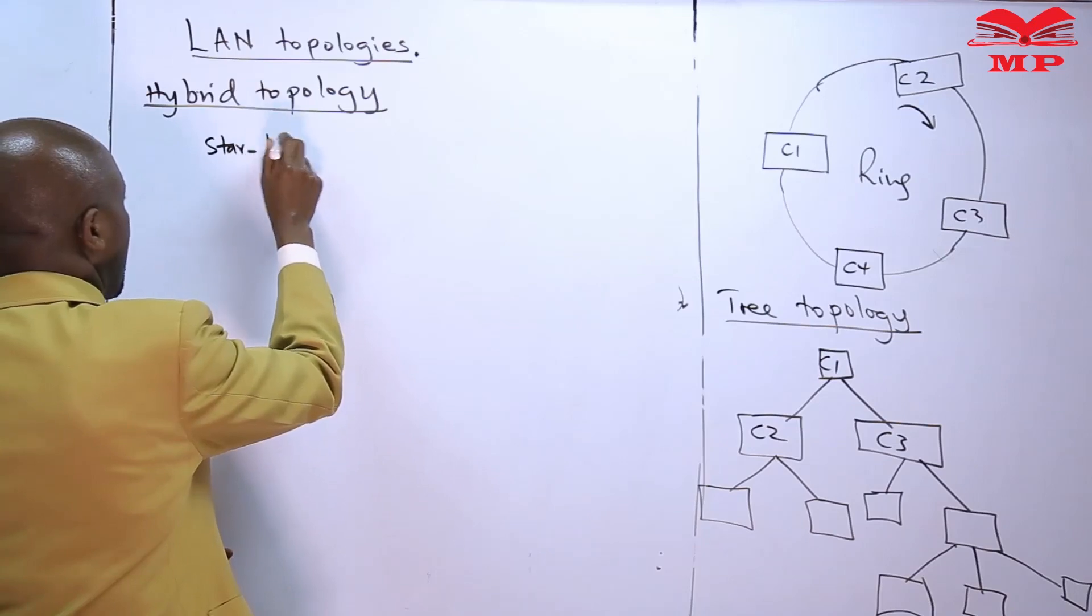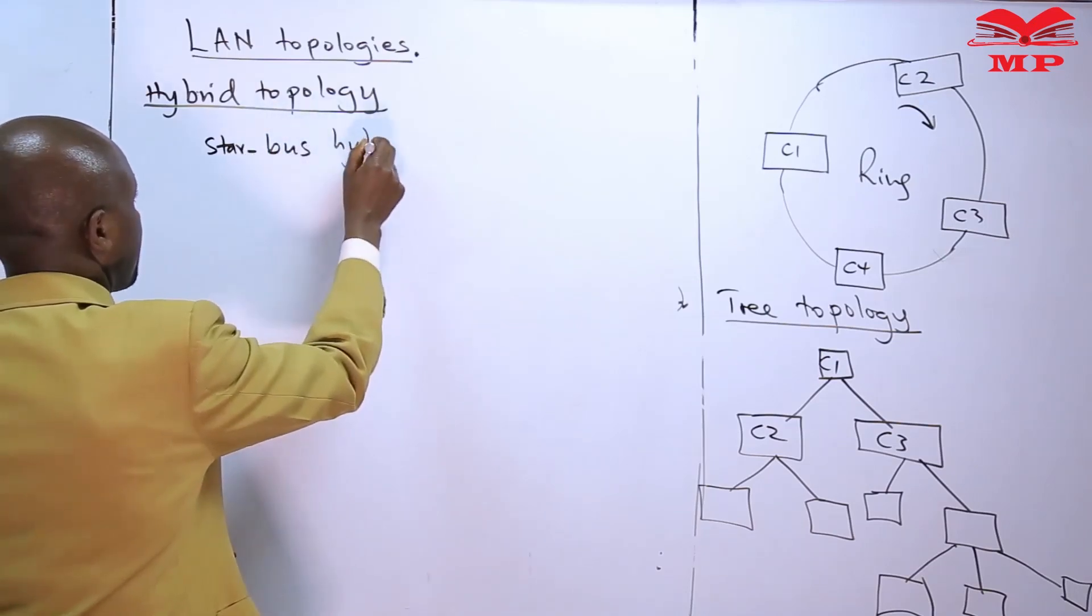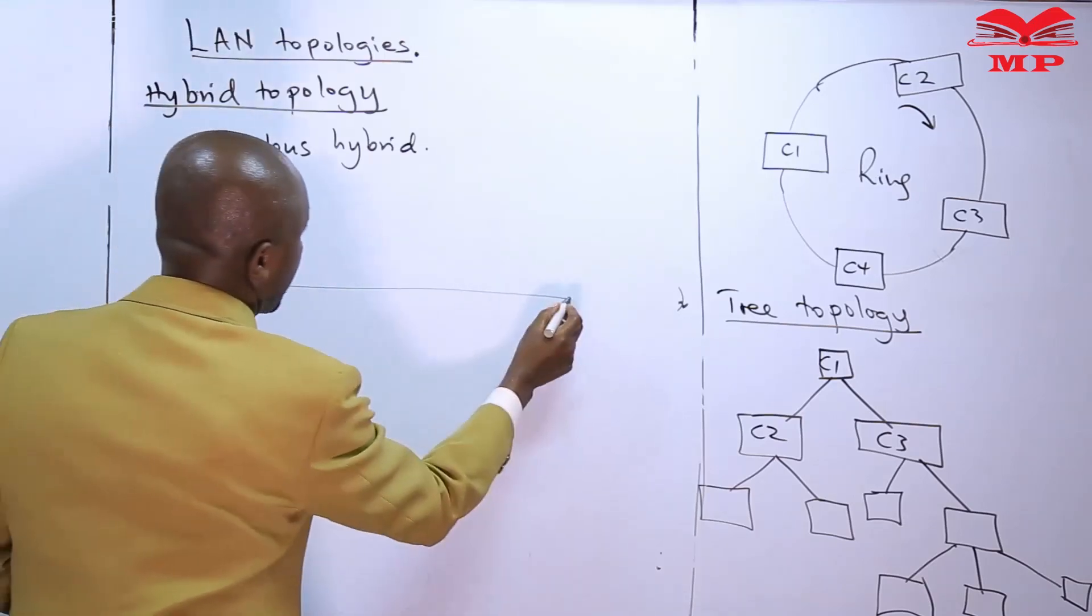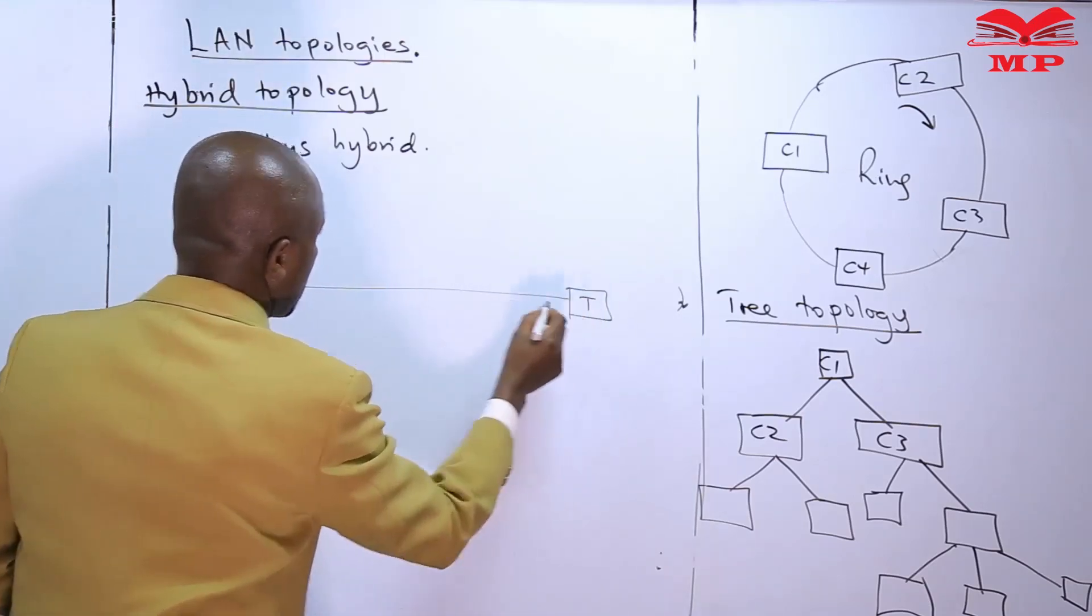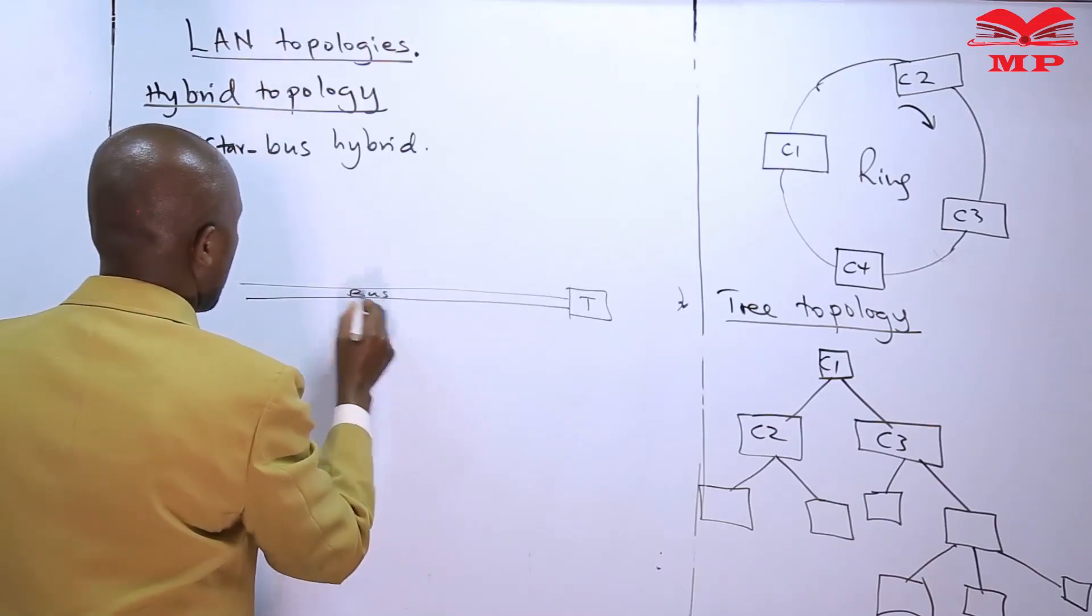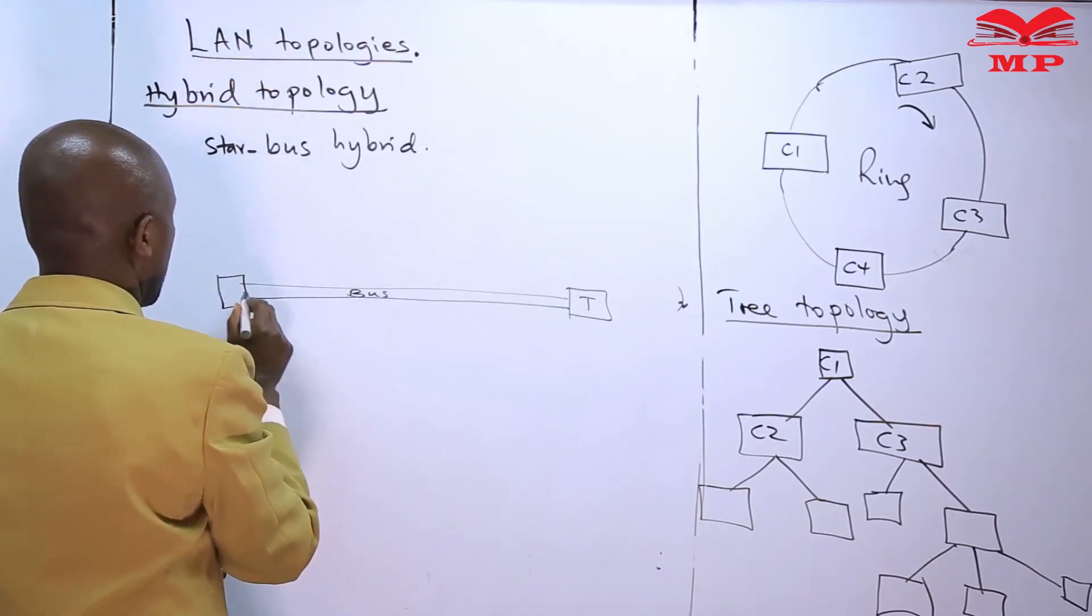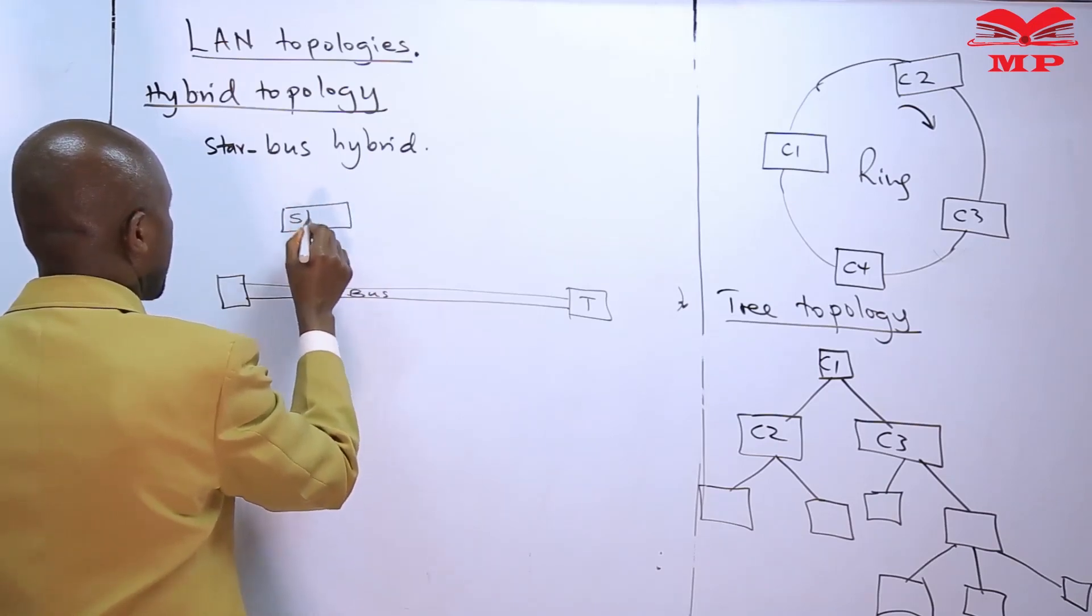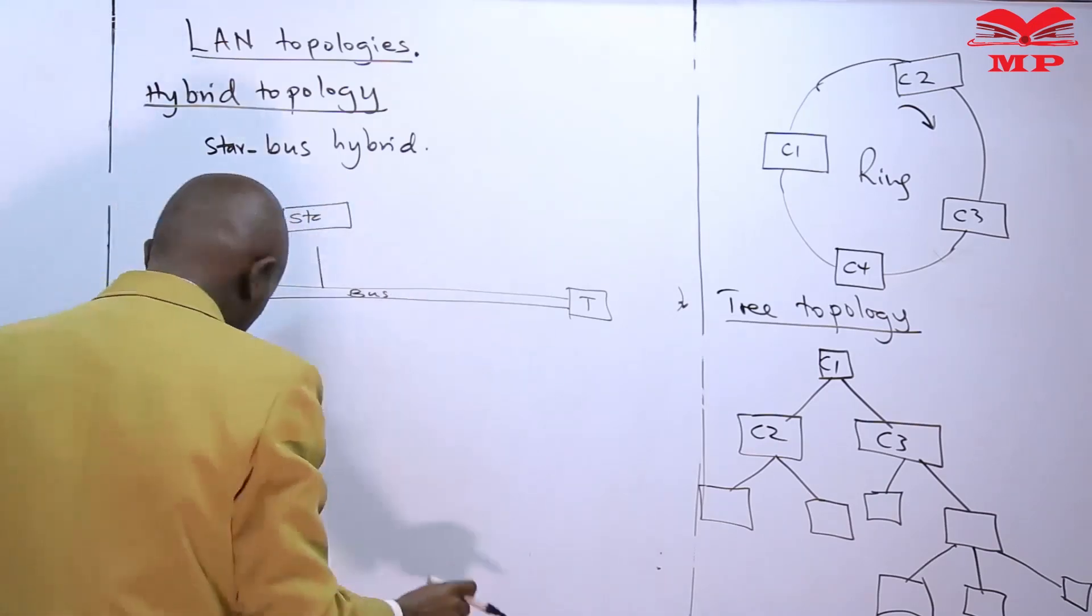So in the hybrid topology, our diagram, a good example of our diagram is the star bus hybrid. The star bus hybrid has a bus, a bus with star networks connected to it. That could be the switch.